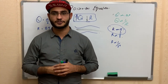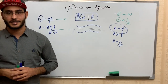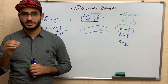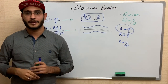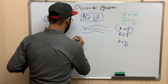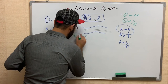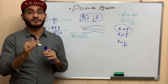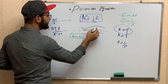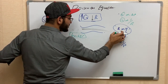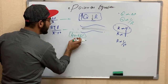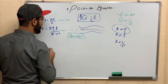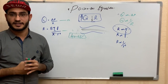Viscosity depends upon the hematocrit value. Hematocrit refers to how much percentage of red blood cells are present in the blood. The normal value of hematocrit is 40 to 45 percent. Viscosity is directly proportional to resistance, and viscosity is also directly proportional to the number of red blood cells, which is the hematocrit.